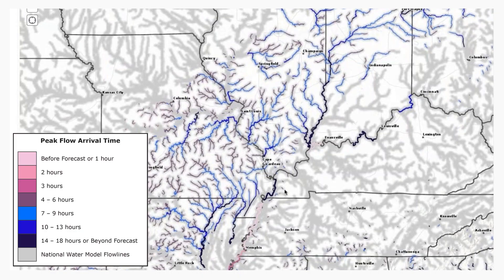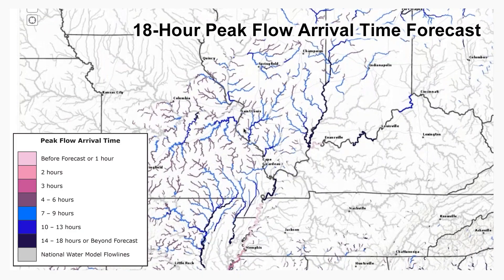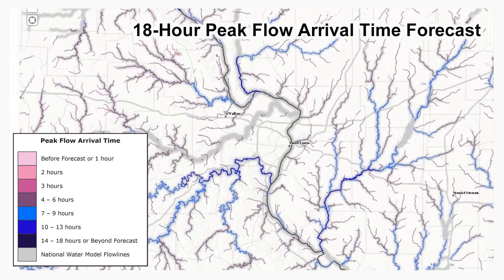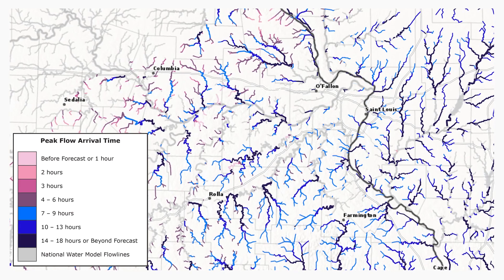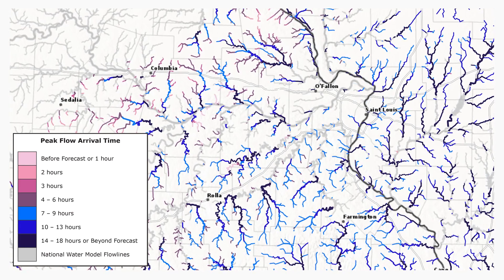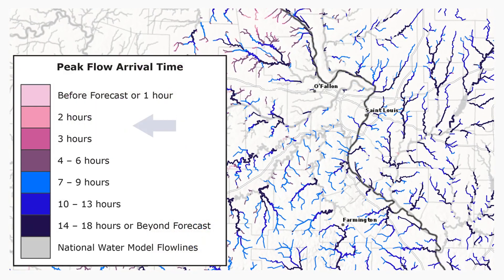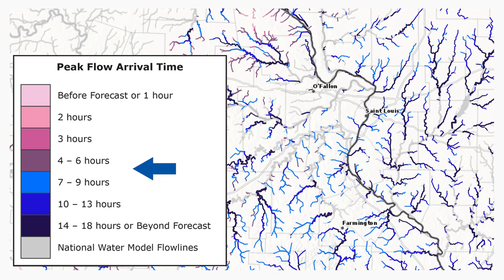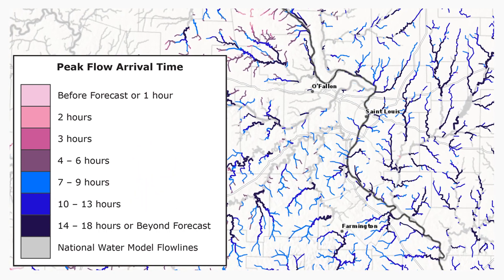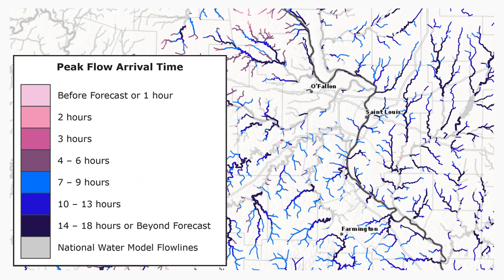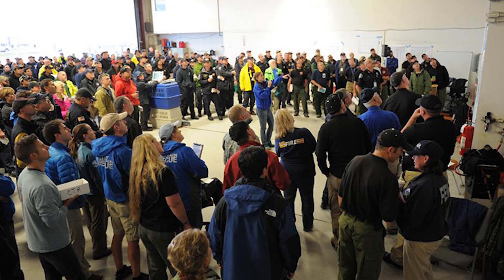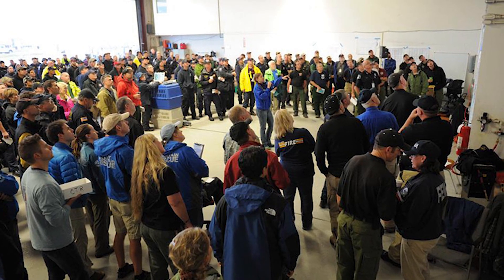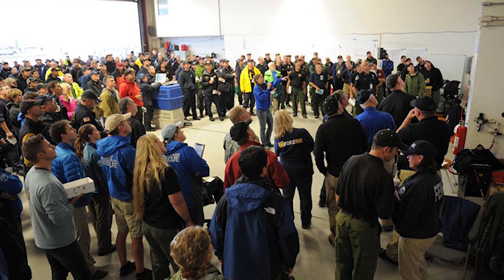As a potential event gets closer in time, we can consult the 18-hour version of this visualization. Although the colors remain the same as the medium-range version, the time intervals are broken up into hours instead of days, which can be useful in a rapid onset flooding event. The 18-hour visualization is vital for supporting partners in anticipating a flash flood situation.